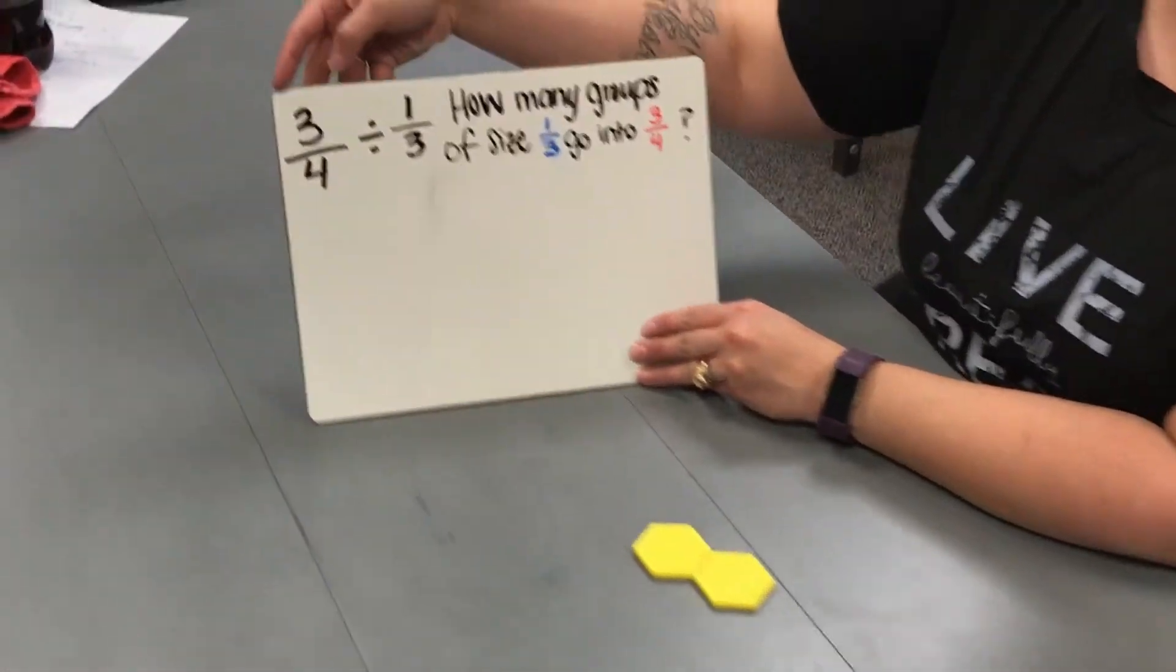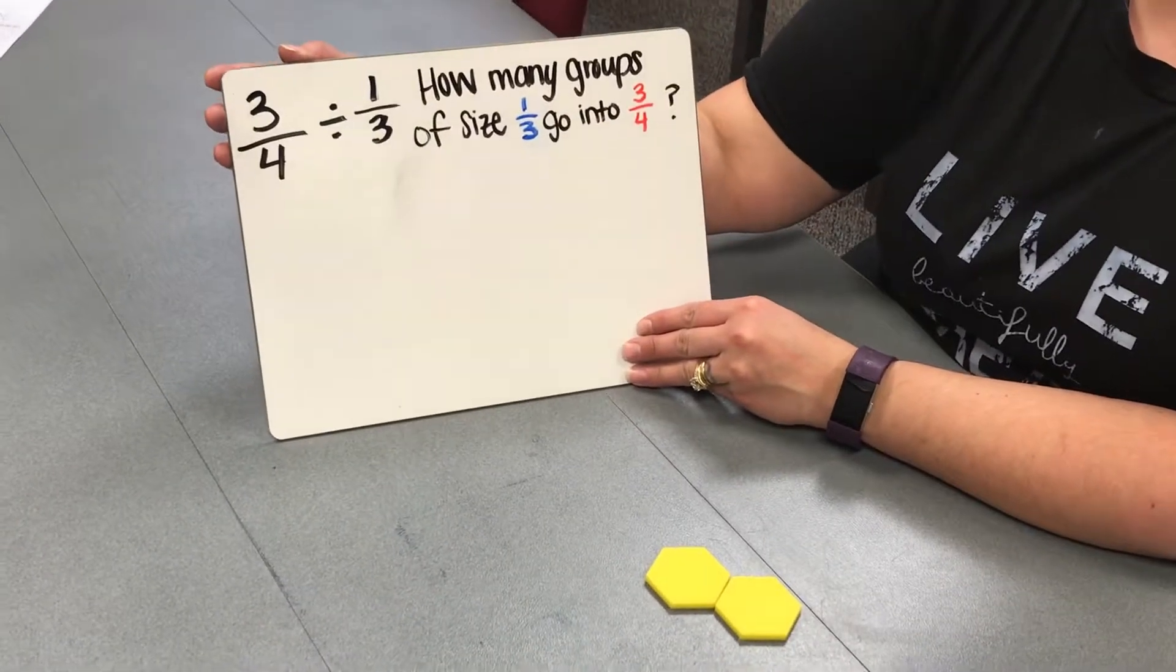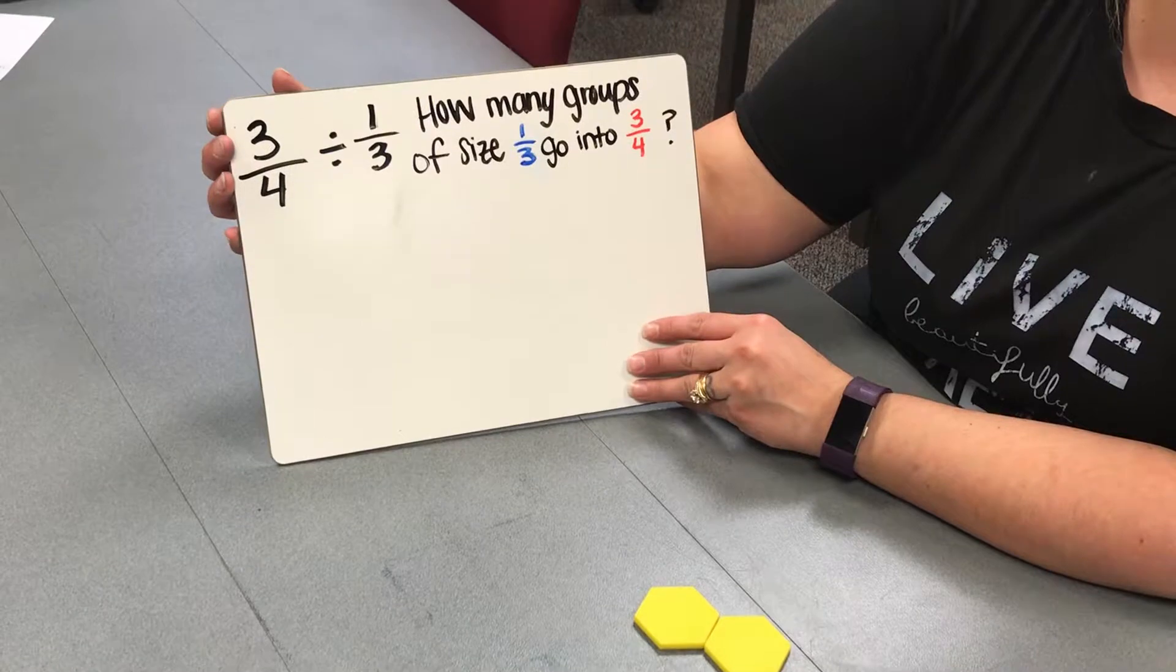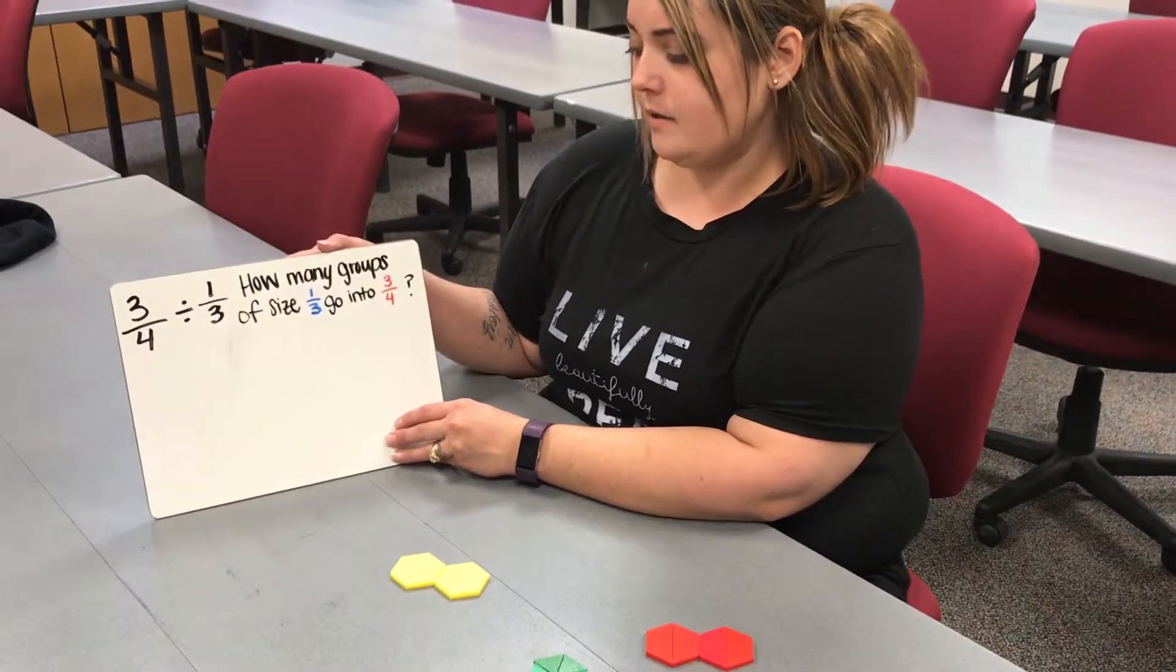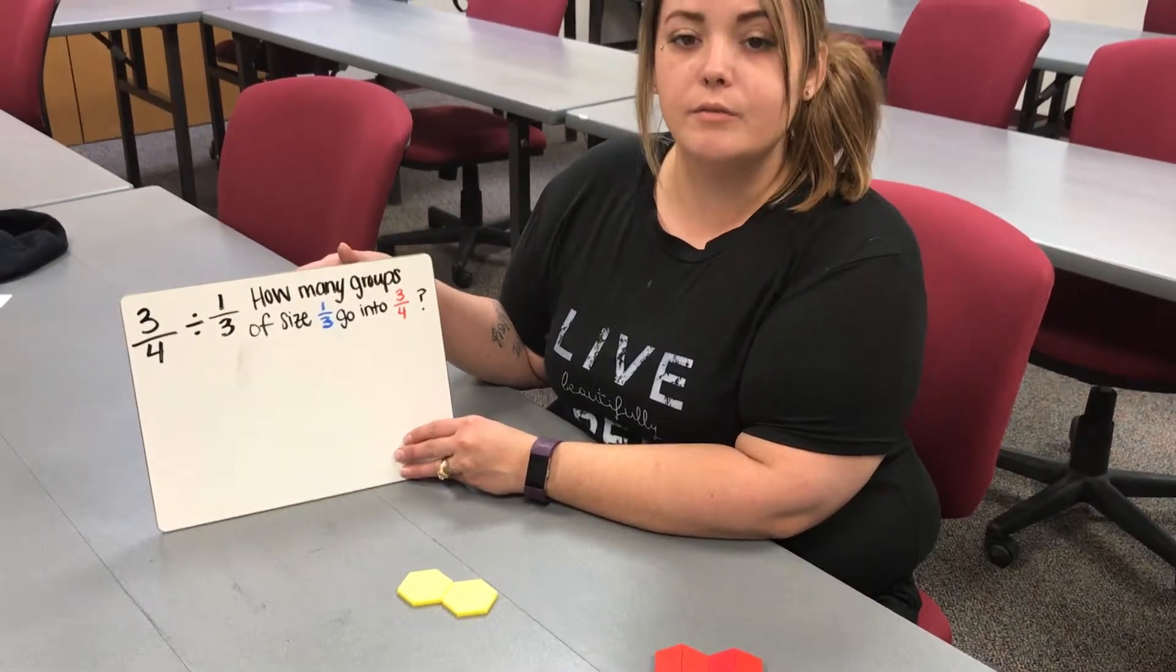The problem we're going to solve is 3 fourths divided by 1 third. Essentially we're asking how many groups of size 1 third go into 3 fourths.